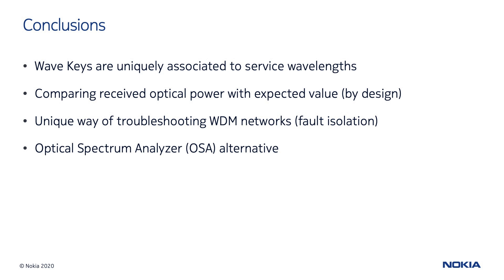Let's now summarize what we have seen in this video. The Wavelength Tracker is a powerful tool to troubleshoot 1830 PSS networks. It relies on the concept of wave keys, a unique pair of numbers associated with each service wavelength, and specifically with each direction of each service. Multiple Wavelength Tracker detection points are embedded in many 1830 PSS optical modules to measure the optical power and compare it with the expected ranges by design. Consequently, Wavelength Tracker can improve the troubleshooting process and effectively localize a failure. It can then raise alarms when the optical power levels are out of range, providing a proactive approach in detecting possible imminent network failures.